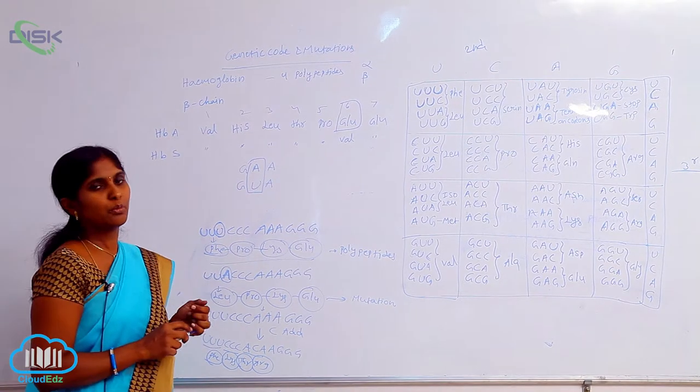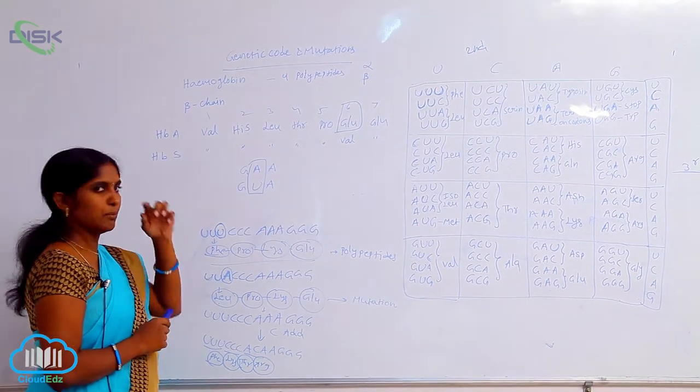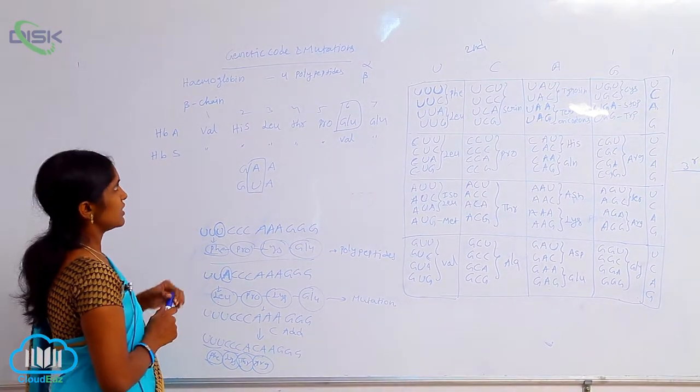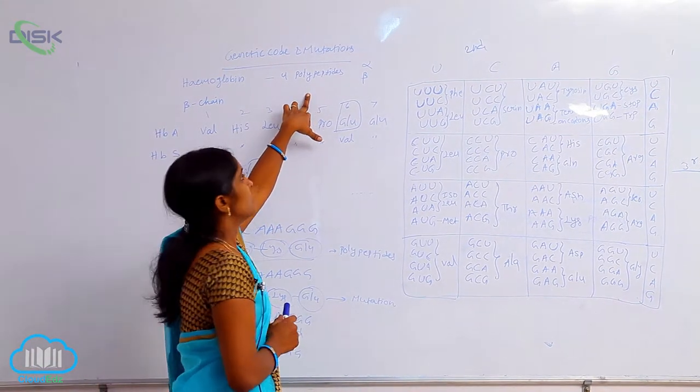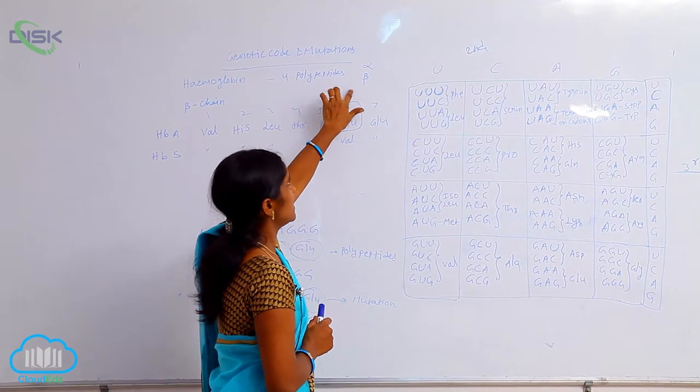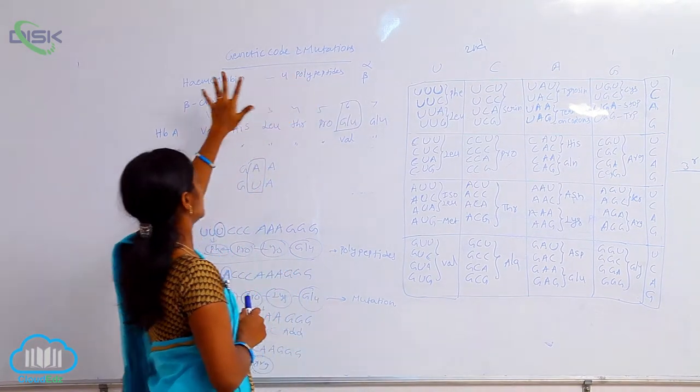You are seeing here hemoglobin. Hemoglobin is the oxygen transporting agent. It is composed of four polypeptides: two are alpha polypeptides, two are beta globulin chains.